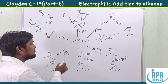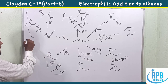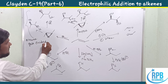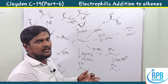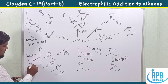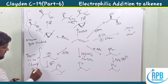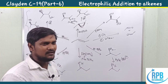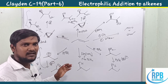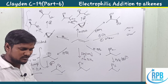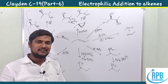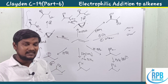Top reagents oxidize the alkene (oxidation state increases), while the bottom reagents show no change in oxidation state. Overall: ozonolysis, osmium tetroxide, epoxide formation, halonium ion, hydroboration, oxymercuration, and hydrohalogenation — these are all electrophilic additions to alkenes. Chapter 19 is now complete. Thank you for watching.